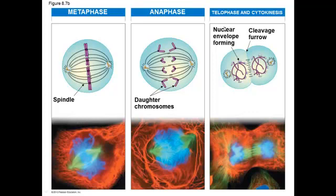Telophase is next — that's the stage where the nuclear envelope begins to redevelop. Then cytokinesis is the stage where a cleavage furrow develops and the cell essentially pinches off into two.